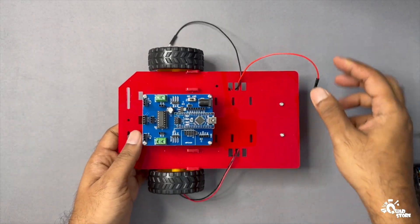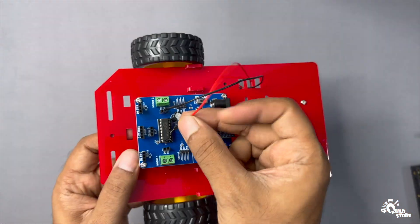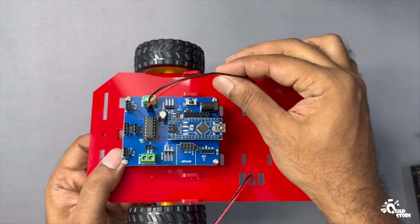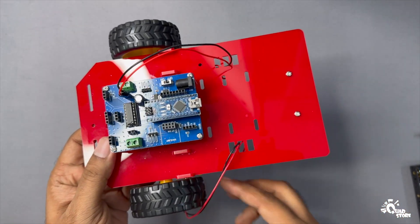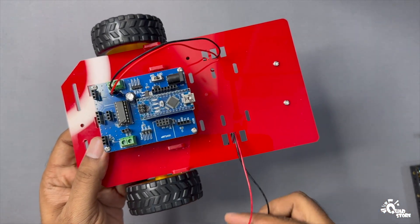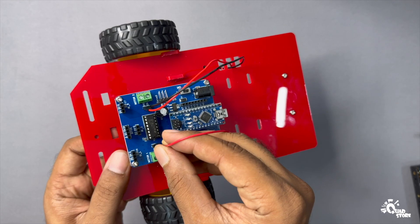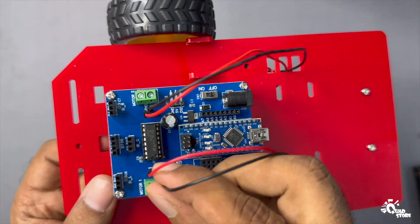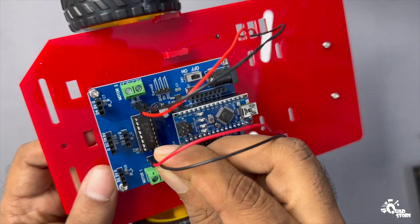Next, connect the motor wires. Insert the right motor wires into the D9 and D10 sockets and the left motor wires into the D5 and D6 sockets on the PCB. Note that the red and black motor wires are interchangeable. If your robot doesn't move straight, simply swap the wires in the sockets to correct the direction.